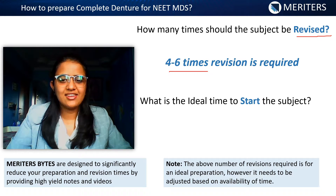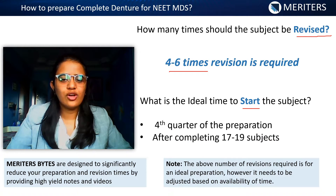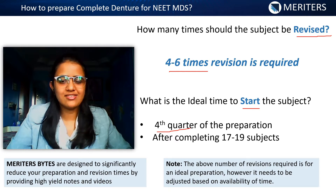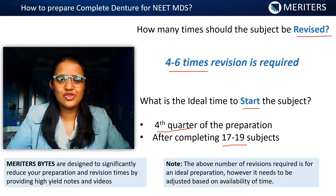What is the ideal time to start this subject? If you divide your preparation into four halves, the fourth quarter — that is towards the end of the exam, after completing 17 to 19 subjects — is when you can start with prosthodontics.